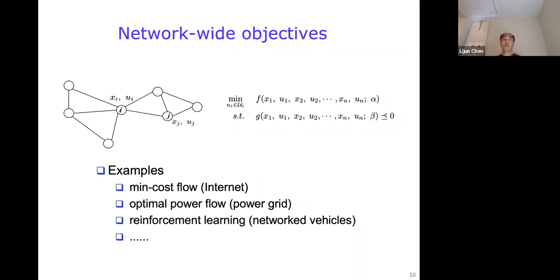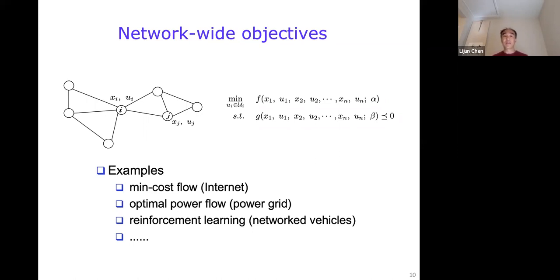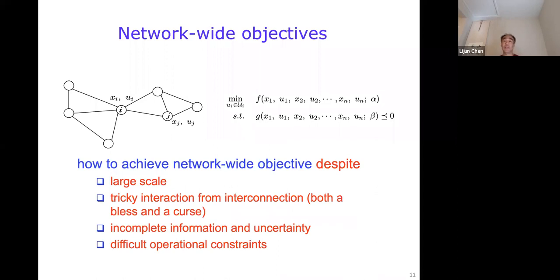There are physical and operational constraints in all these problems. For example, in data transfer the aggregate data rate on a communication link should not exceed the link capacity. In the power system the power supply and demand need to be balanced at all times, and the power flow on a power line should not exceed the line limit. In a system of networked vehicles, you may want to keep enough distance between different vehicles. But how to achieve network-wide objectives despite the large scale of the system, tricky interactions from interconnection, incomplete information and uncertainty, and difficult operational constraints?